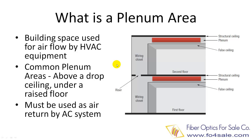Fiber cable's fire ratings has everything to do with how the cable is used in different areas inside a building. First, let's check what is a plenum area. A plenum area is a space used by air conditioning system for air circulation and heating ventilation. Typically, the plenum area is used for returning air to the HVAC equipment.